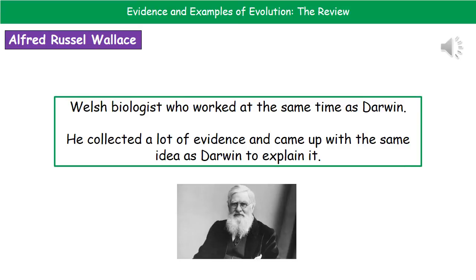The second person who is very important is Alfred Russel Wallace. He was a Welsh biologist working at the same time as Charles Darwin, but he never really got the same recognition. He also collected a lot of evidence and came up with the same idea as Darwin to explain it.